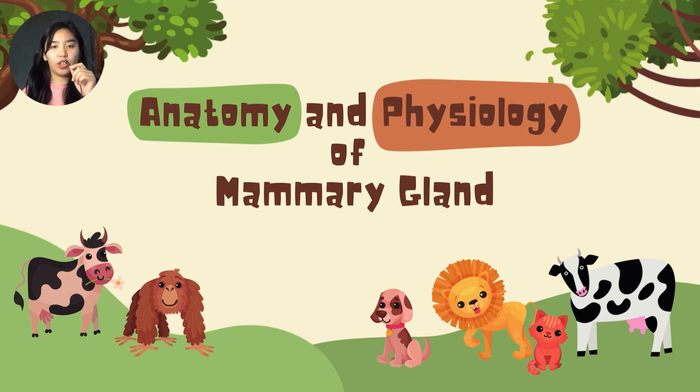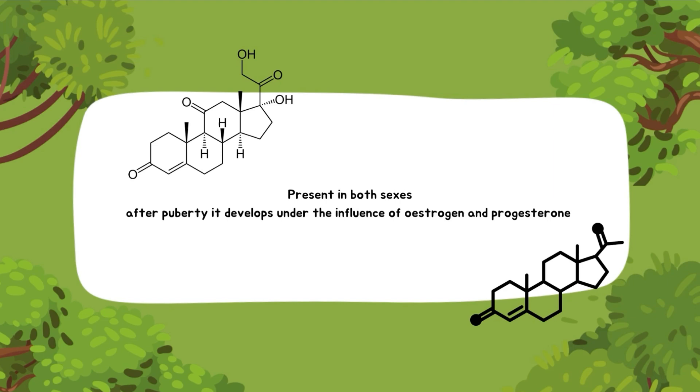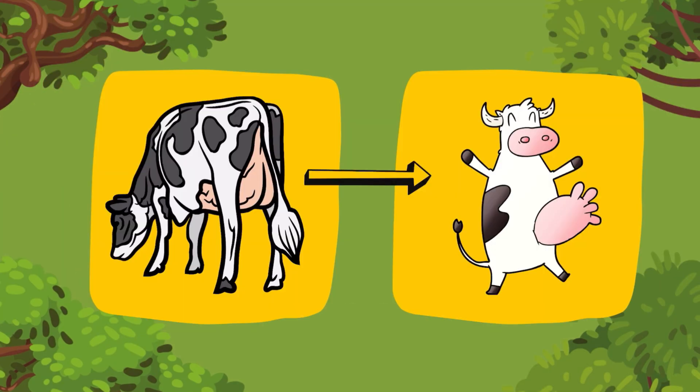The anatomy and physiology of mammary gland. Present in both sexes, after puberty it develops under the influence of estrogen and progesterone. During pregnancy, there will be further development of the udder and it becomes ready for lactation.